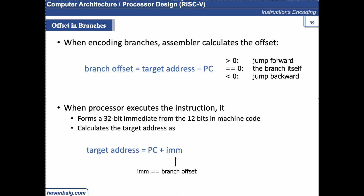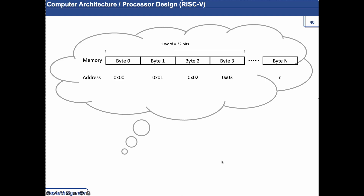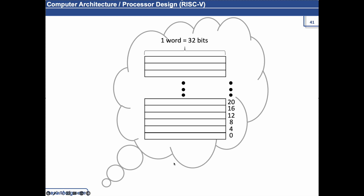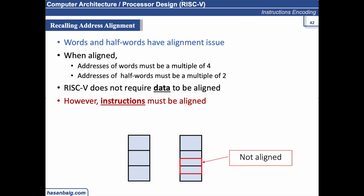The 4-bit analogy holds true for 12 bits — instead of being limited to 2048, we increase reachability. Now recalling memory structure: memory is a one-dimensional array of bytes. Words and half-words have alignment requirements — word addresses must be multiples of 4, half-word addresses multiples of 2. RISC-V does not require data alignment, but instructions must be aligned.